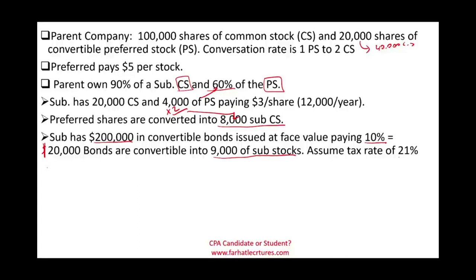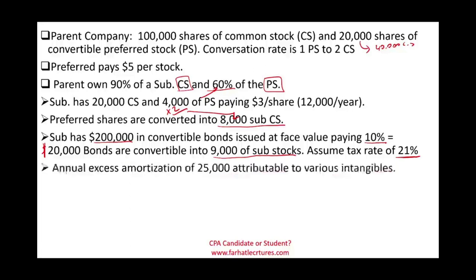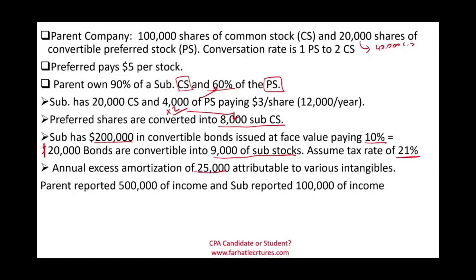We assume a tax rate of 21% for this example. When we convert the bond, we have to remove the interest expense net of tax, which we'll see later. Because of the consolidation relationship, there is an annual excess amortization of $25,000 attributed to various intangibles — a result of the parent purchasing the sub. The parent reported $500,000 of income and the sub reported $100,000 of income.